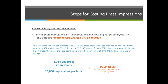The correct answer is 1,714,286 press impressions divided by 18,000 impressions per hour. I pulled the values from the word problem provided. We were given the sum of 1,714,286 press impressions, and all the rest of the information in the problem is miscellaneous. At the bottom, it tells us they will be printed on a press that can run 18,000 impressions per hour.